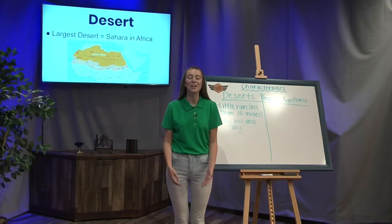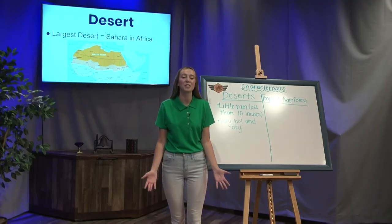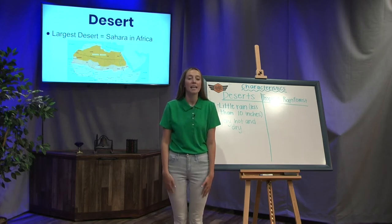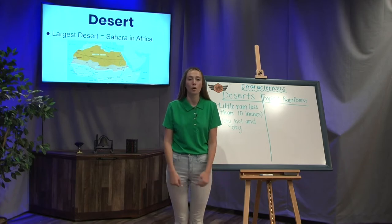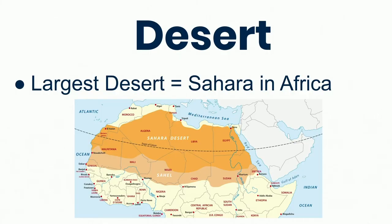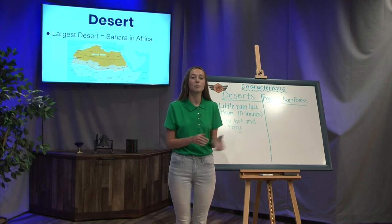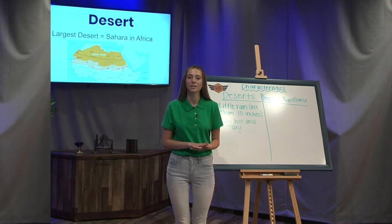When we talk about deserts, a lot of people know about the Sahara Desert in Africa, because it is the largest desert in the whole world and it covers a large span of Africa. This is one ecosystem, remember? But a desert biome is all of the different deserts. Let's slide to more characteristics of deserts.